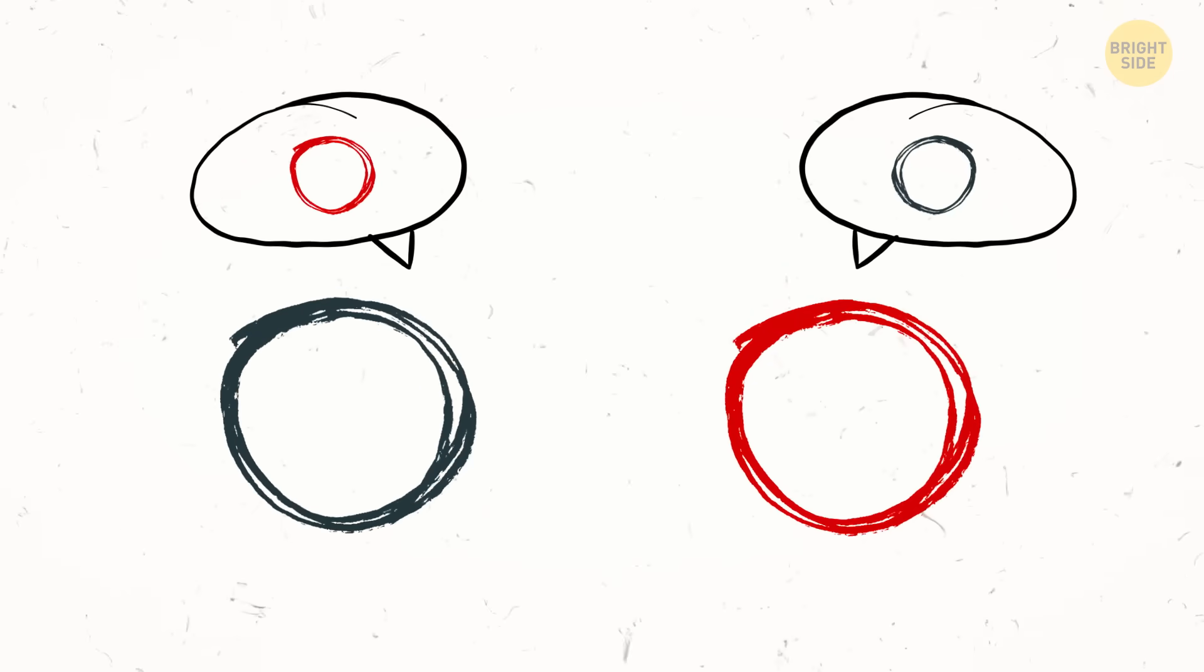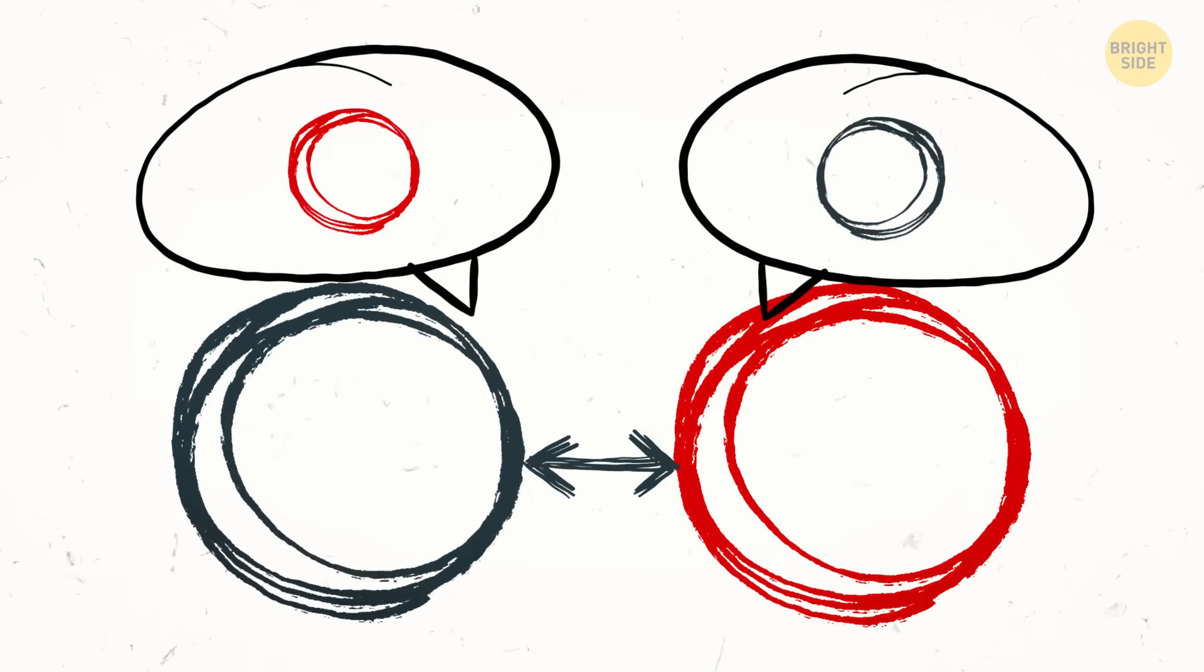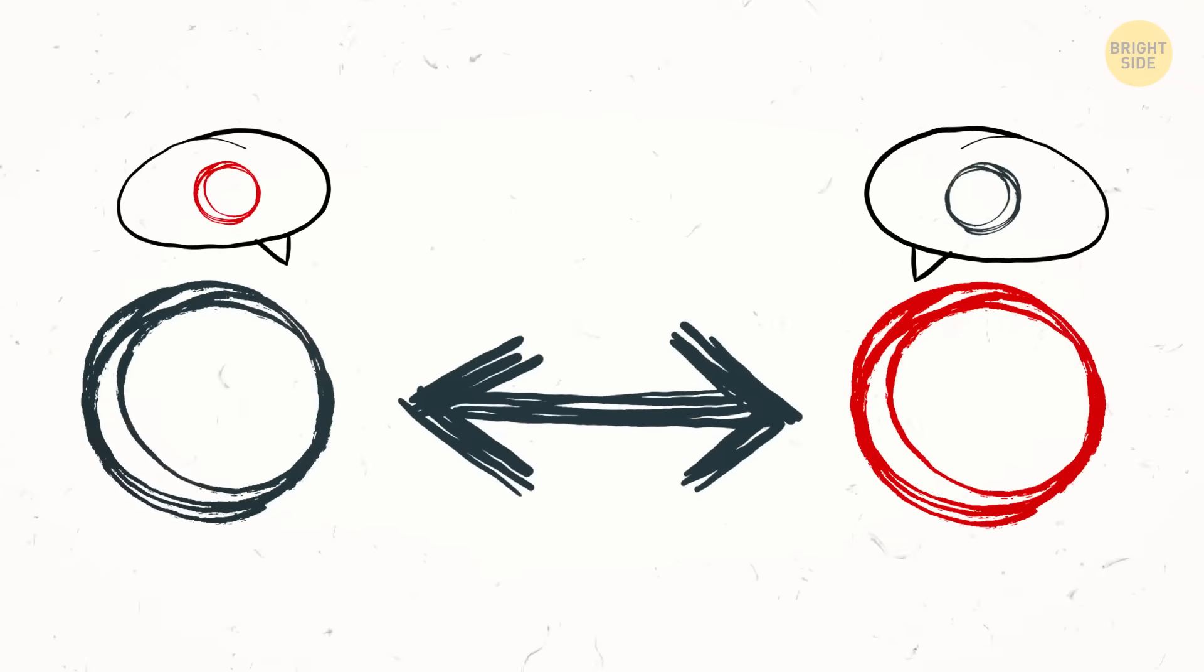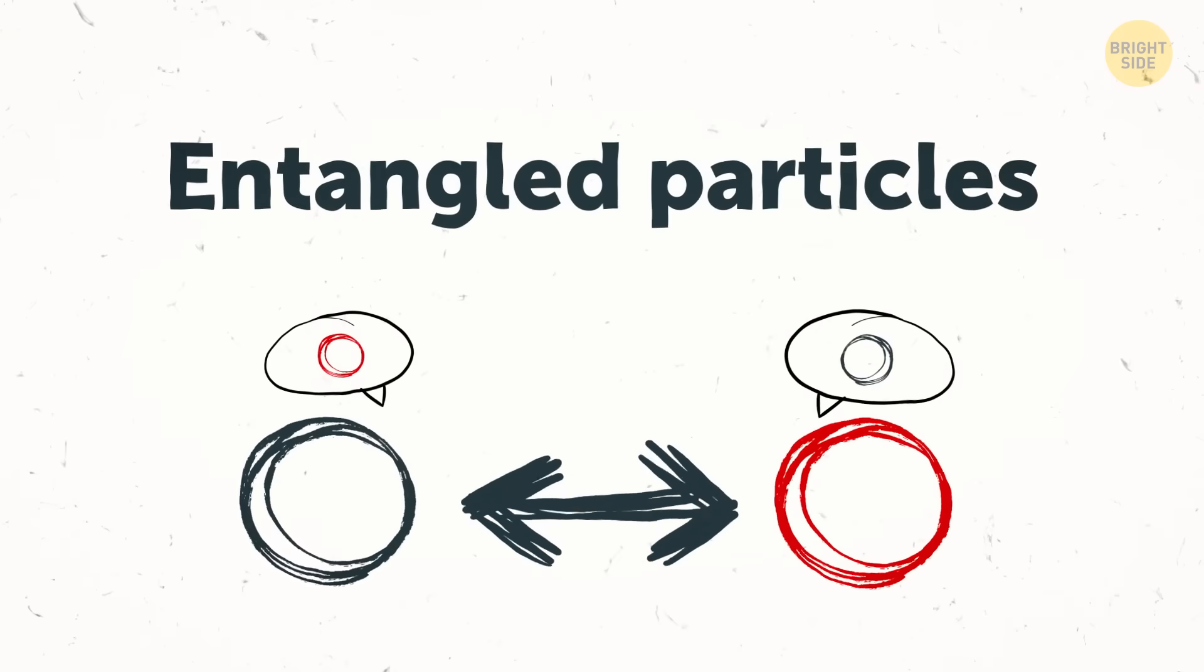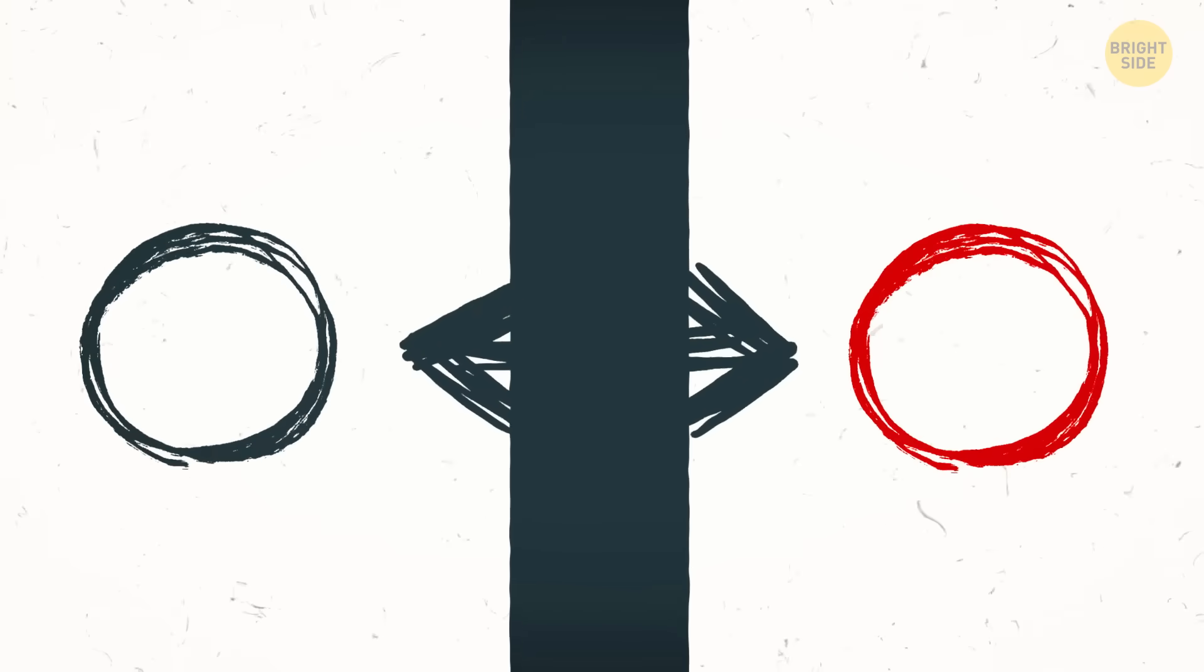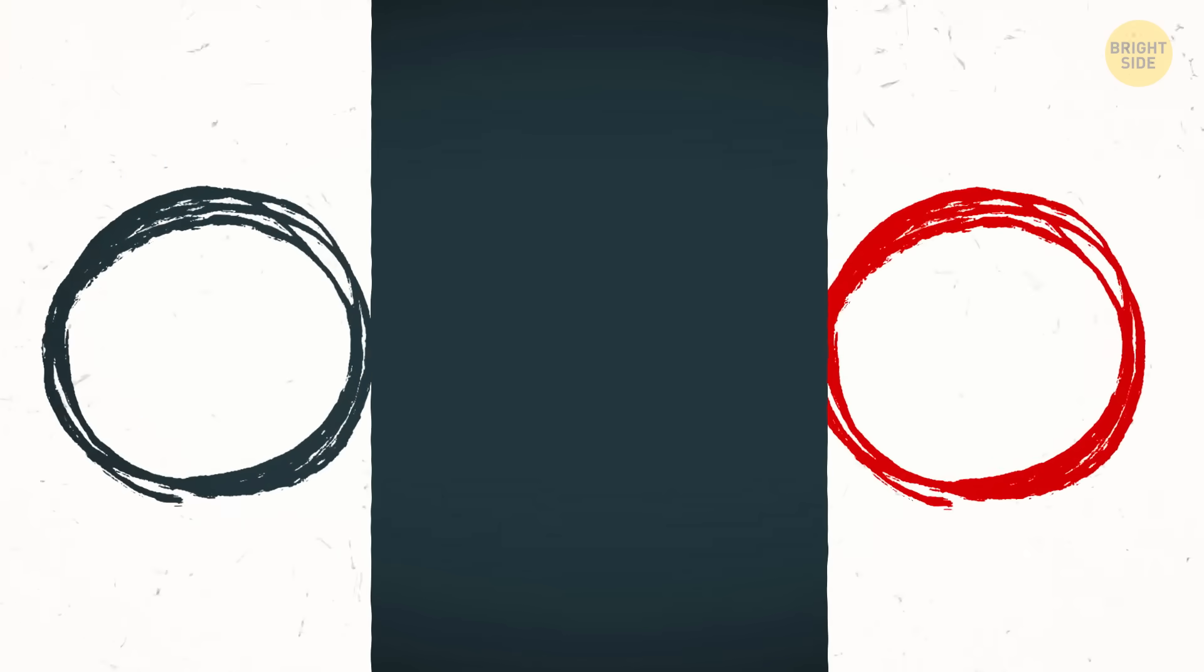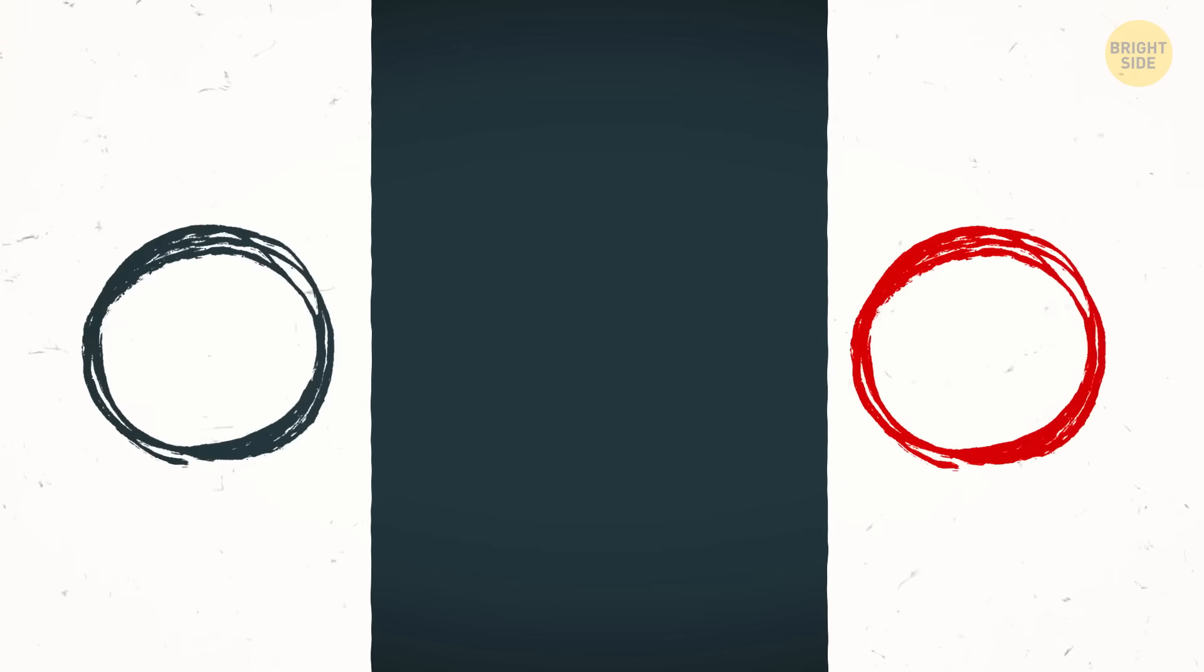And that's not the only creepy thing in our world. Imagine two particles becoming connected in such a way that they can know stuff about each other even when they're galaxies apart. This is called entangled particles. Even though they don't talk to each other through anything, no sound, no light, nothing, the state of one particle instantly influences the state of the other, no matter how far apart they are.